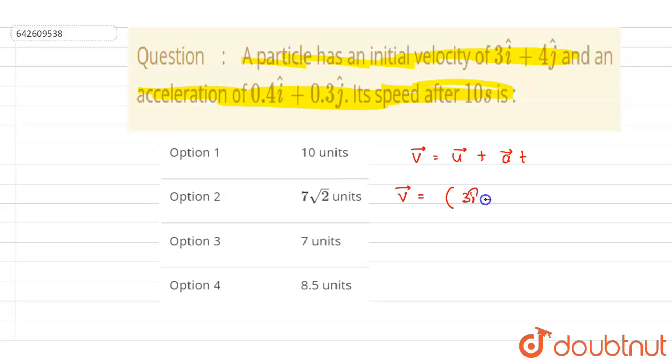u is 3i cap plus 4j cap plus 10 times 0.4i cap plus 0.3j cap. Now if you see, this is 3 plus 4, which gives 7i cap plus 7j cap. This is the velocity vector at t equals 10 seconds.